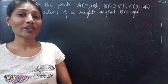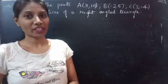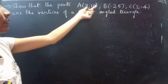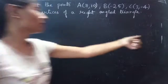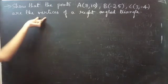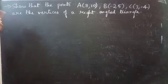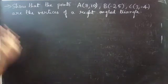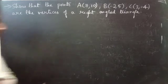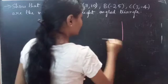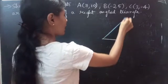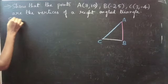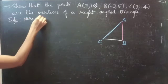Hello everyone, this is Katna here. In this video we're going to see a problem on coordinate geometry. The problem is: show that the points A(7,10), B(-2,5), and C(-3,-4) are the vertices of a right-angled triangle. So here we have to prove that the points A, B, C are the vertices of a right-angled triangle.